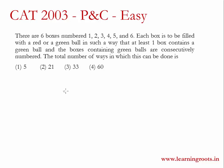The question says there are six boxes numbered 1 to 6. Each box is to be filled with a red or green ball such that at least one box contains a green ball and the boxes containing green balls are consecutively numbered. The total number of ways this can be done is?